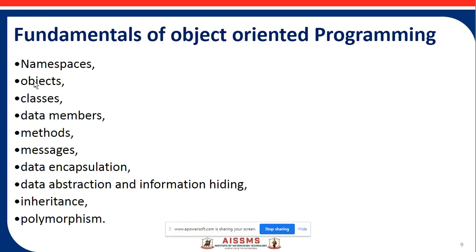Next is the fundamentals of object-oriented programming — the pillars of OOP. These include: namespaces, objects, classes, data members, methods, messages, data encapsulation, data abstraction, information hiding, inheritance, and polymorphism. These are the main fundamental concepts related to object-oriented programming, which we will discuss in our next lectures.